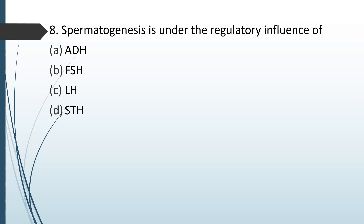Spermatogenesis — the process of formation of sperm — is under the regulatory influence of: ADH, FSH, LH, or STH. The correct answer is option B, follicle stimulating hormone (FSH). It is the hormone that controls spermatogenesis.